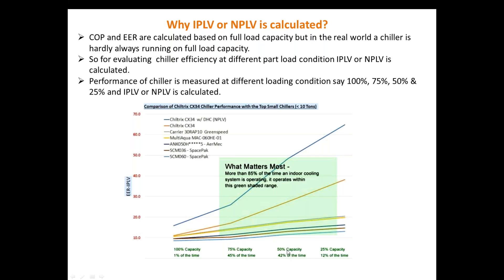The chiller works at 25 percent capacity about 12 percent of the time, and interestingly the chiller works at 100 percent of its full capacity only one percent of the time. This shows that the COP and WR values calculated are of no use because they are based on the assumption that the refrigerator or chiller works at full capacity — which only happens one percent of the time. Most of the time HVAC or refrigeration devices work on part load.